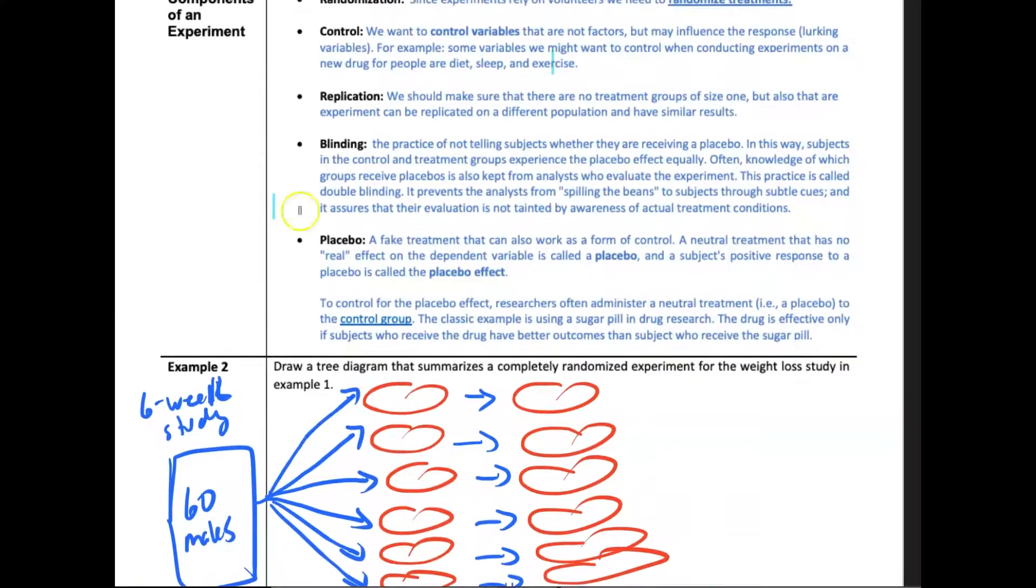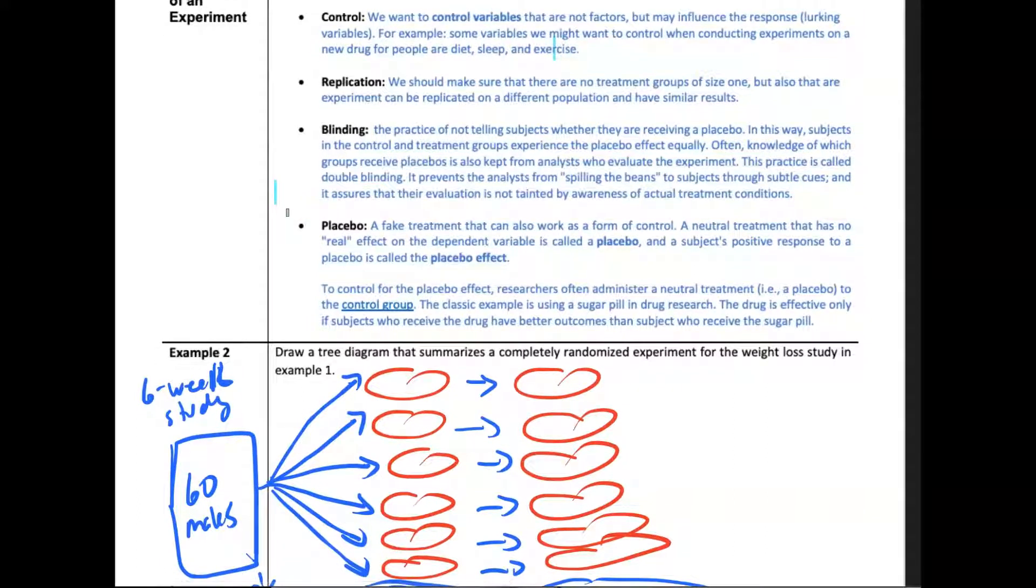Blinding is a process where many times you don't know what treatment you're getting, or even the researchers don't know who's getting the treatment, so that there's no bias within that. Read this definition, but also think about this blinding aspect. You don't want people to know what's going on. You're going to treat them, but you don't want them to know if they're getting what we call a placebo or the actual drug or treatment, because you don't want false positives. If they know they're getting the drug, they may report out different ways, or it may affect the results.